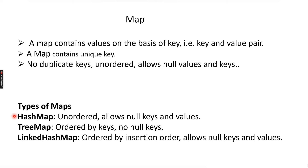We already saw three classes that implement the Map interface: HashMap, TreeMap, and LinkedHashMap. The difference between them is: HashMap is unordered, TreeMap is ordered by keys, and LinkedHashMap is ordered by insertion order. In LinkedHashMap the insertion order is maintained. In TreeMap natural ordering — that is ascending order — is maintained, and HashMap is unordered.